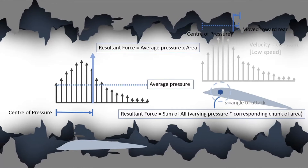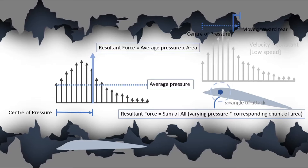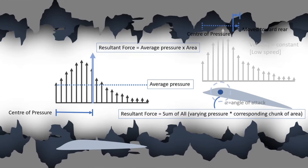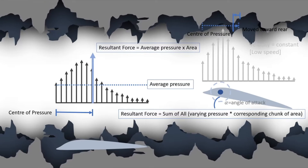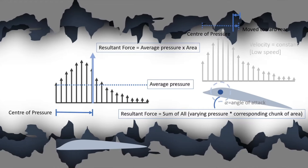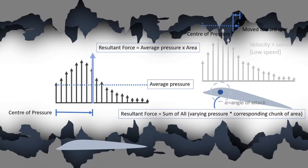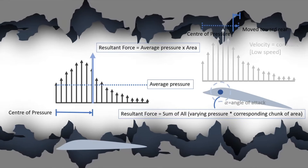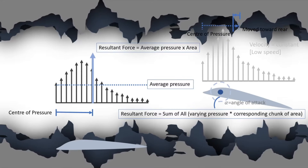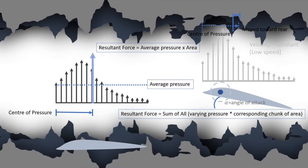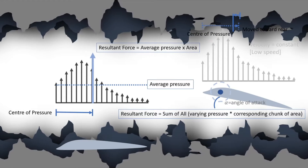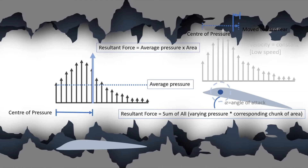We know how to find the magnitude and the position of the resultant force. The position of the resultant force we found is called the center of pressure. We can replace all the forces acting on each chunk of area with a single resultant force at the center of pressure.